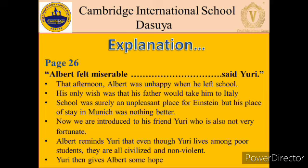School was surely an unpleasant place for Einstein, but his place of stay in Munich was nothing better. Because of limited cash availability with his father, he had to stay within the poorest neighborhood in Munich. However, poverty, bad food, dirt, and lack of comfort hardly bothered him — it was the frequent fights at the place that he hated. Even the landlady's family was a violent one, where she used to hit her kids every now and then, while her husband beat her every Saturday after he came back drunk.